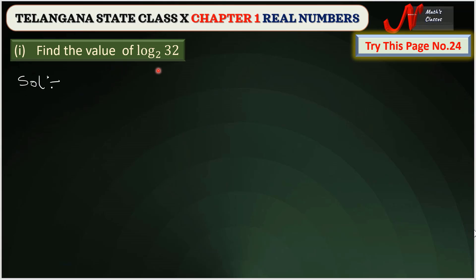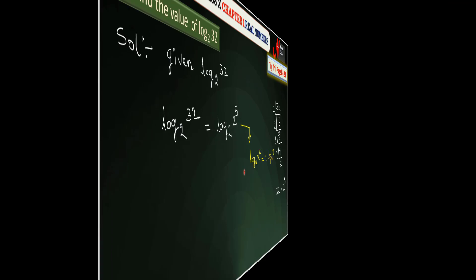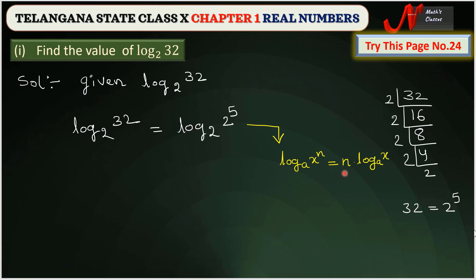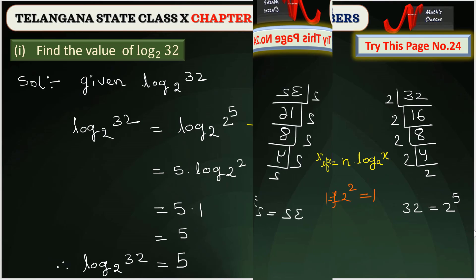First, find the value of log 32 base 2. We write the given log 32 base 2 and find the prime factors of 32, which gives us 2 to the power 5. So log 32 base 2 equals log 2^5 base 2. Using the power rule — log x^n base a equals n times log x base a — we get 5 times log 2 base 2, which equals 5 times 1, so log 32 base 2 equals 5.